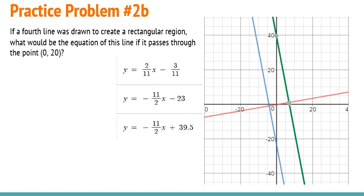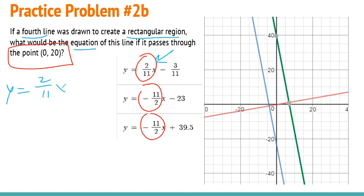Now that we know which line matches what, let's think about if we wanted to make a fourth line to create a rectangular region, what would be the equation of that line. And let's say it has to pass through the point 0, 20. So we know we're going to want to use one of these slopes again. And the one we want to use is the one that doesn't already have a match. Because we want a fourth line that's going to be basically parallel to this line, just hitting at a different location.